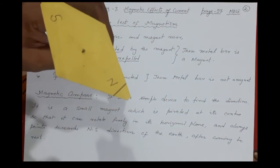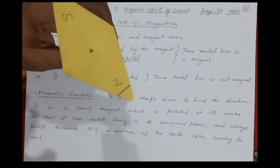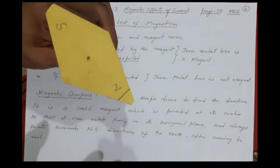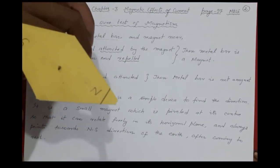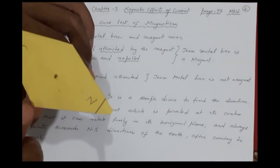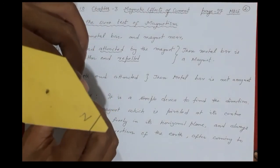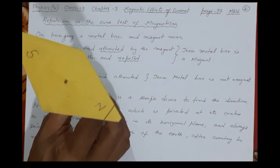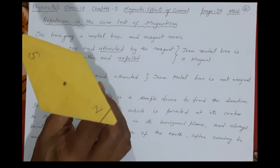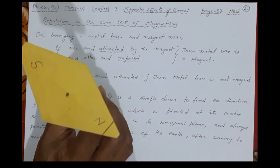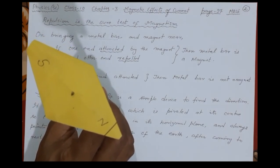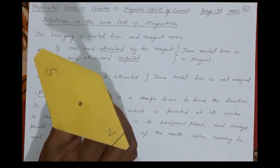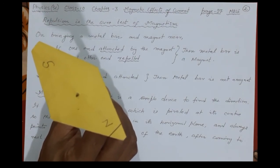This is how people use a compass needle so that directions are not lost. This is a very good example of using the magnetic property of a material in a device. This covers the repulsion test for magnetism and the magnetic compass device.